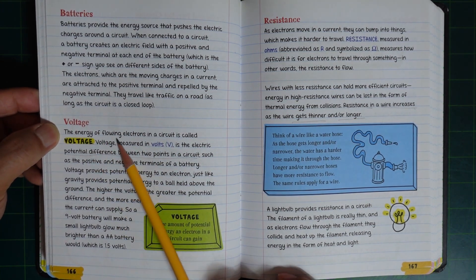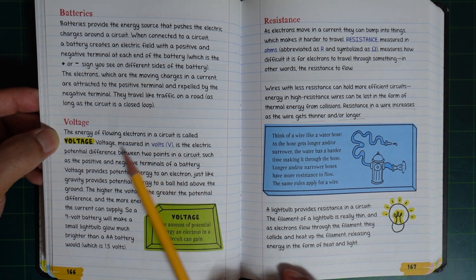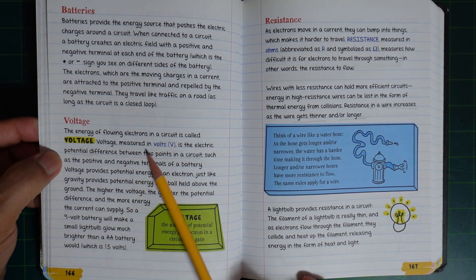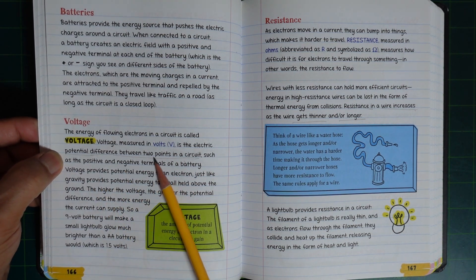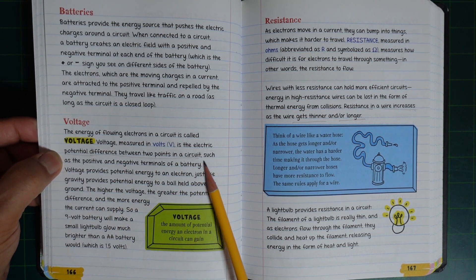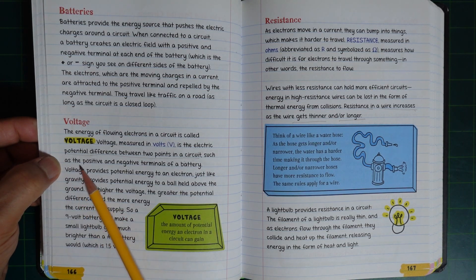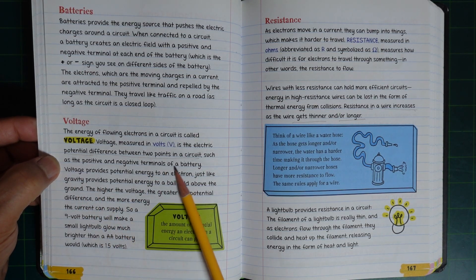The energy of flowing electrons in a circuit is called voltage. Voltage, measured in volts, is the electric potential difference between two points in a circuit, such as the positive and negative terminals of a battery.